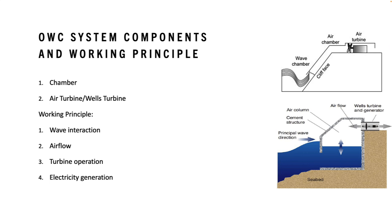When the water level rises, the air inside the chamber is compressed, forcing it to flow out through the air turbine. As the water level falls, the air is drawn back into the chamber, creating a reverse air flow. This oscillating air flow is the key to the OWC system's operation.